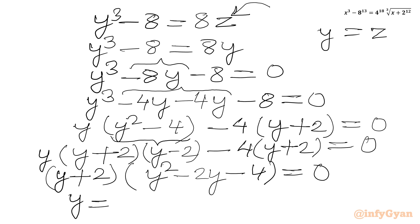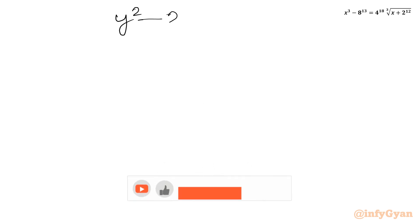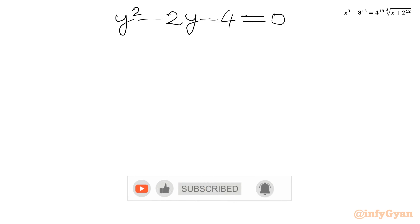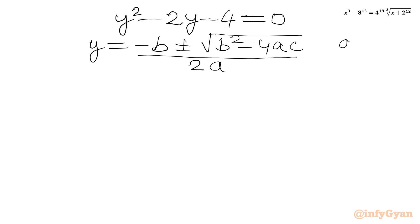From (y+2) = 0, we get y = −2. From the quadratic part y² − 2y − 4 = 0, we use the quadratic formula y = (−b ± √(b²−4ac)) / 2a, where a = 1, b = −2, c = −4.